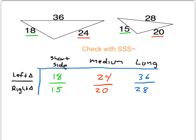18 divided by 15 — both top and bottom are divisible by 3 — and that simplifies to 6 fifths. 24 and 20 — both are divisible by 4 — and that also simplifies to 6 fifths. So those two sides are proportional. But 36 over 28 — both are divisible by 4 — and that reduces to 9 sevenths. That means the long side is not proportional. So even though the first two ratios are equal, since the last one isn't equal, we've just shown that these two triangles are not similar.